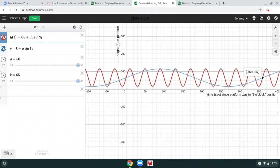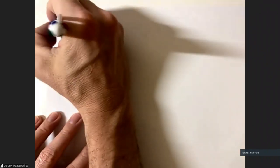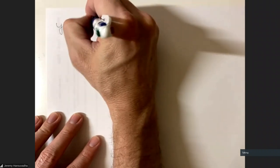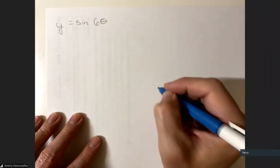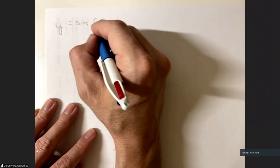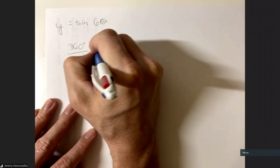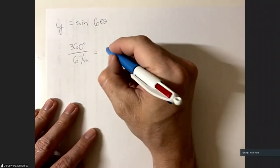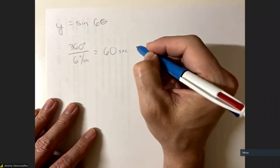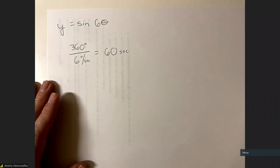Let's do an example. We need to graph the function y equals sine of 6θ. The 6 is the angular speed, so 360 degrees divided by 6 gives 60 seconds for the period. That means it takes 60 seconds to make one complete cycle.